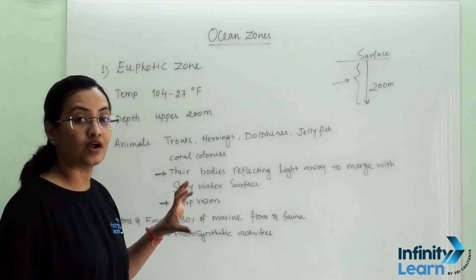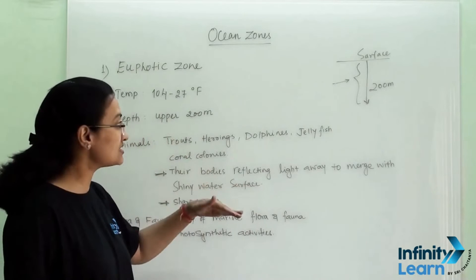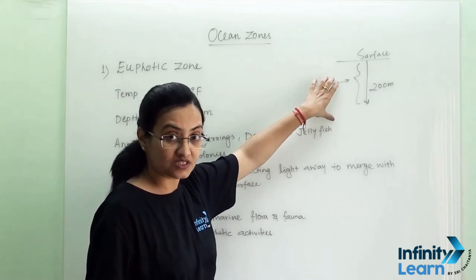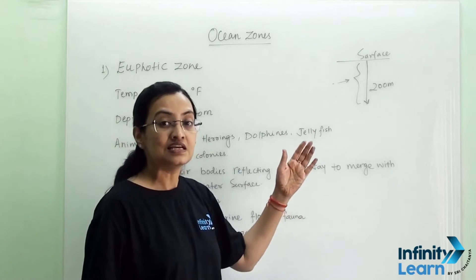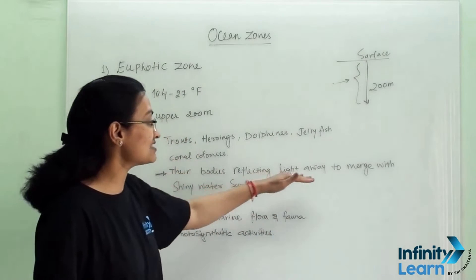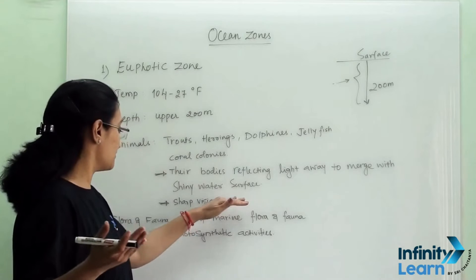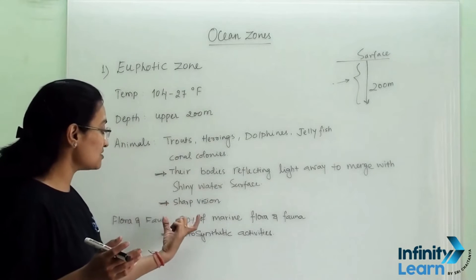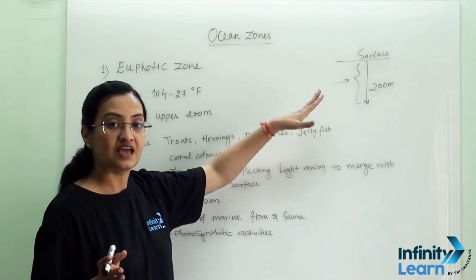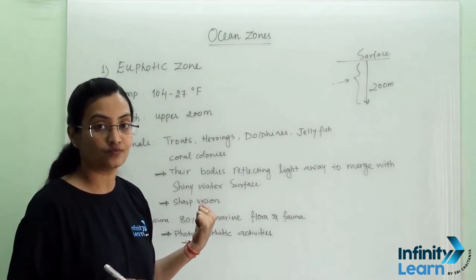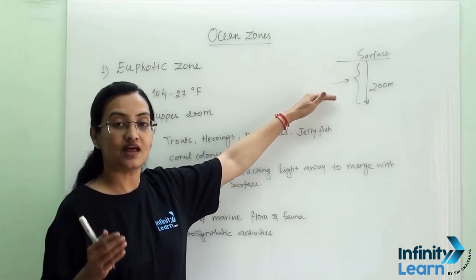The adaptation animals have acquired to survive in this zone includes reflecting light away to merge with the shiny water surface. Since this is the first zone starting from the surface, sunlight is maximum here, so predators can easily be seen. Animals reflect light to merge with the shiny water surface to safeguard themselves from predators, and they have sharp vision. Also, maximum 80% of marine flora and fauna can be seen in this zone, as photosynthetic activity is maximum here due to maximum light.